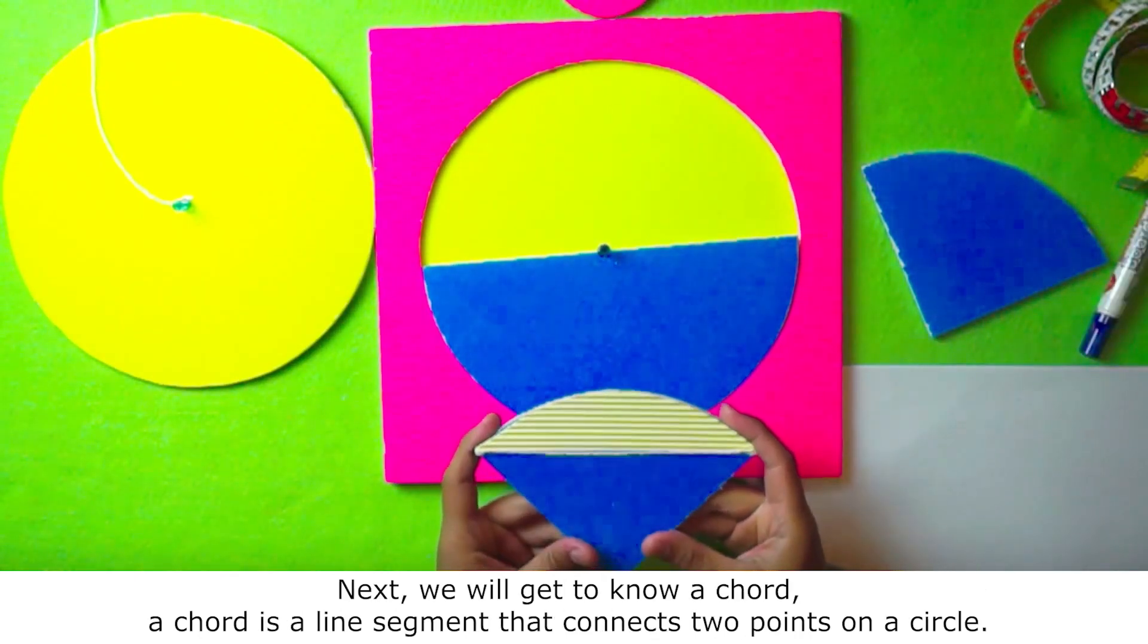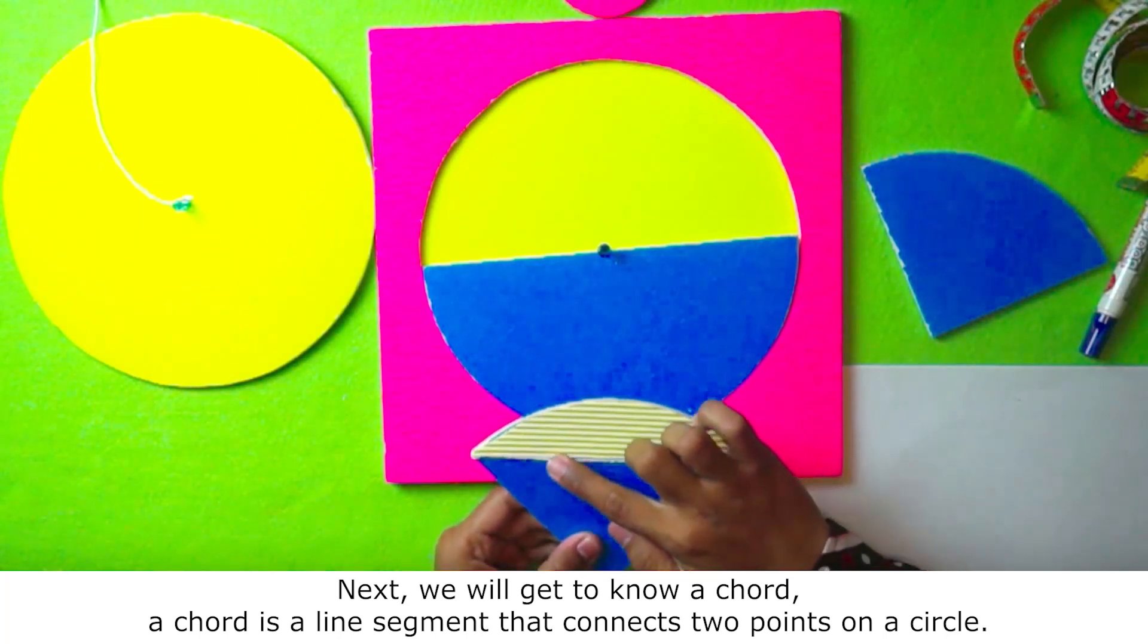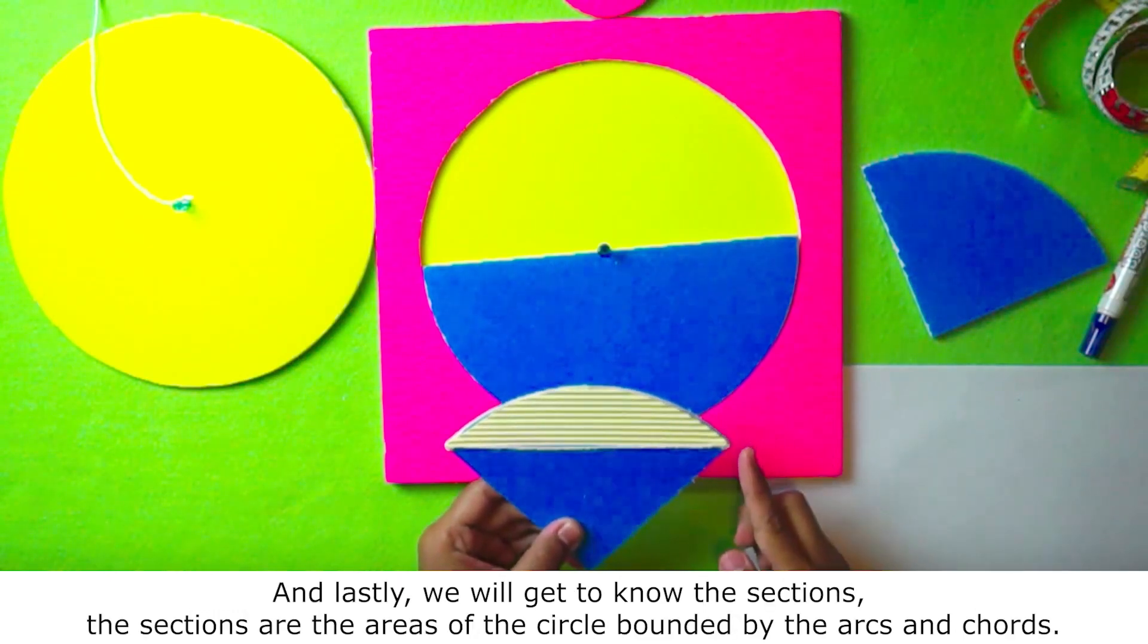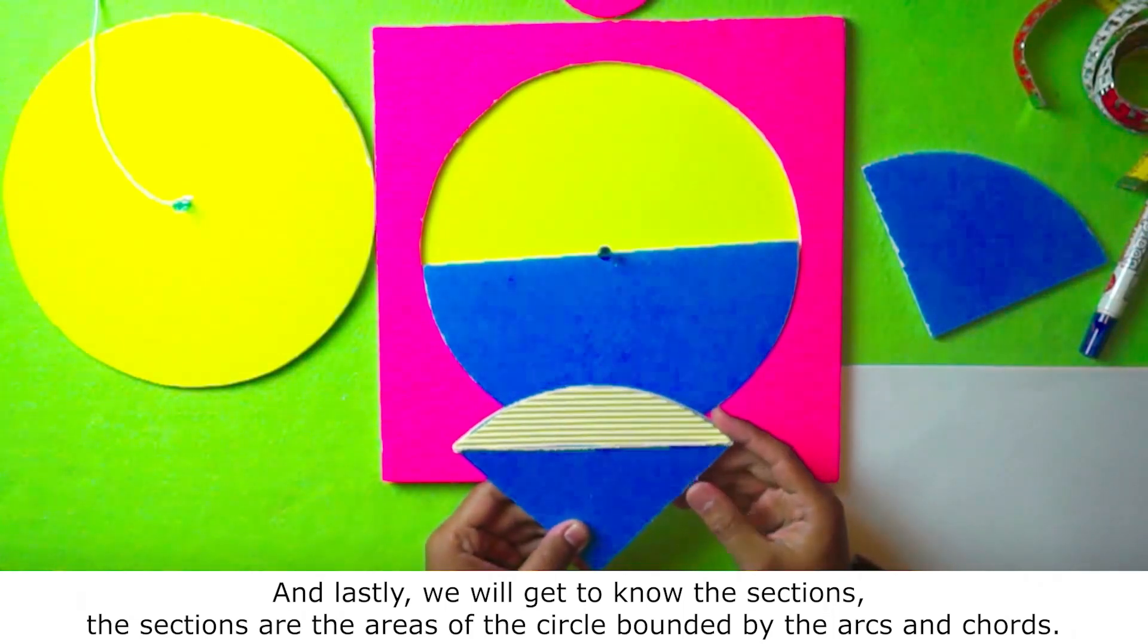Next, we will get to know a chord. A chord is a line segment that connects two points on a circle. And lastly, we will get to know the sections. The sections are the areas of the circle bounded by the arcs and chords.